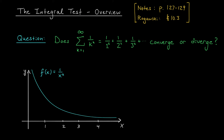The motivating question for today's discussion concerns this series: the sum from k equals 1 to infinity of 1 over k squared — that is, 1 over 1 plus 1 over 4 plus 1 over 9, and so on. Does this series converge or diverge? The terms are certainly getting smaller; they tend to 0 as k goes to infinity, so the series passes the test for divergence and we can draw no conclusions from it. The only other test we have is the geometric series test, but unfortunately this is not a geometric series, so we need another approach.